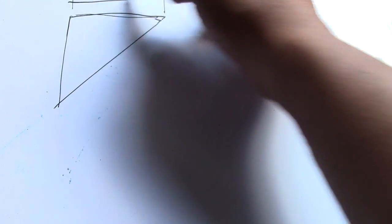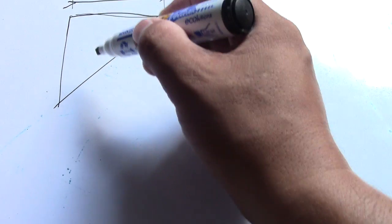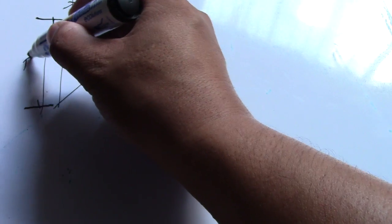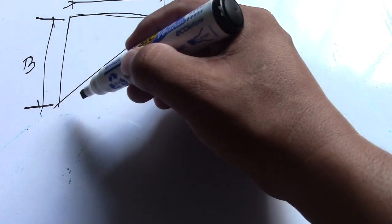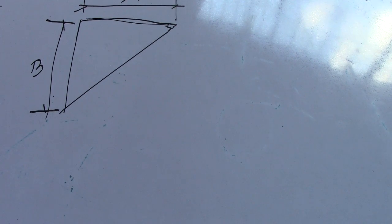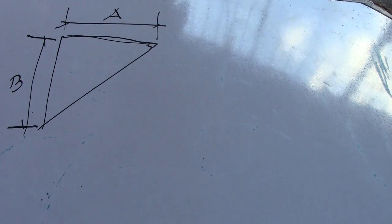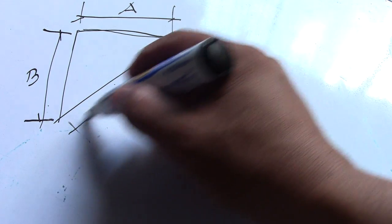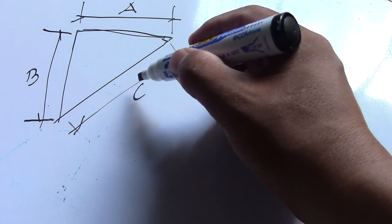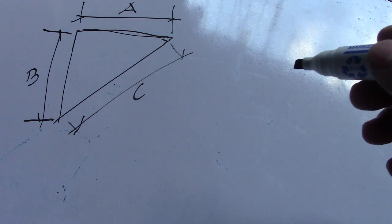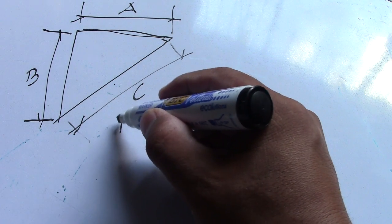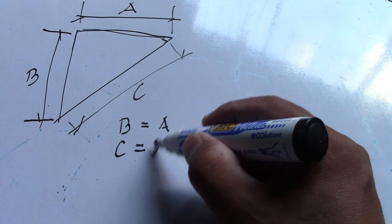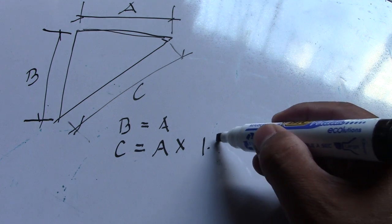So we have dimensions here: dimension A, dimension B, and dimension C. The formula is: B equals A, and C equals A multiplied by 1.414.